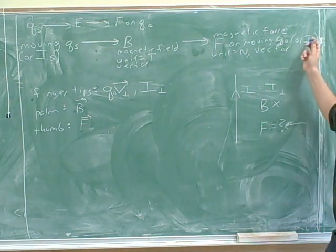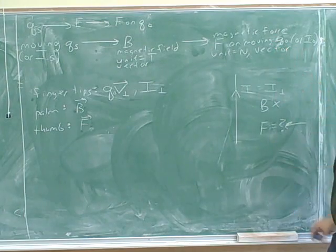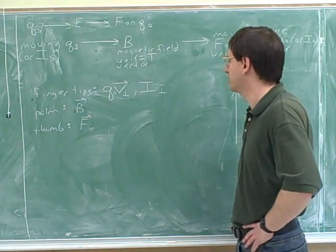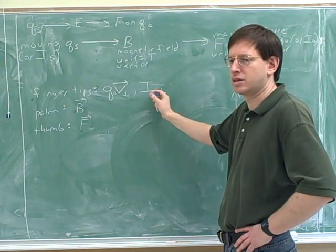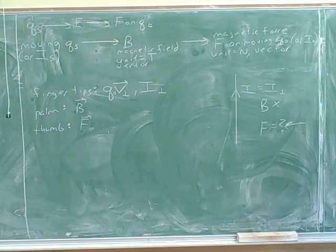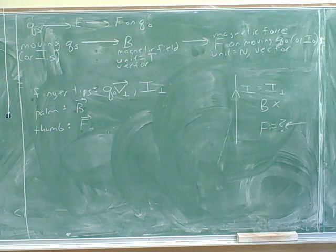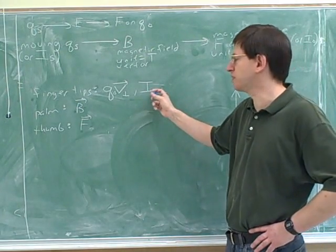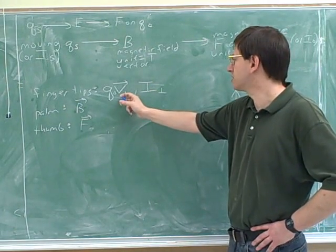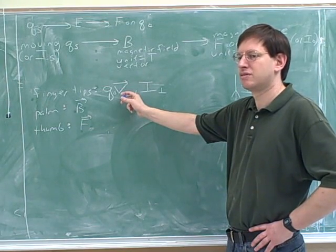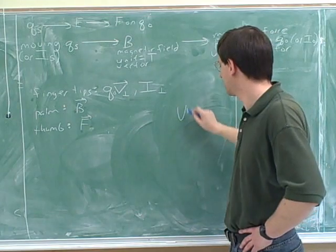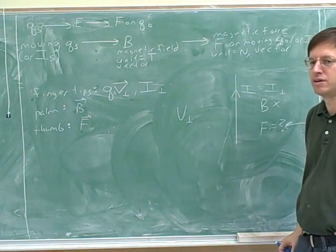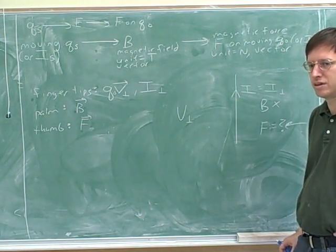So this is how we deal with the case of a current, which you'll see more often than just a separate charge. Just point your fingertips in the direction of I perpendicular — that stands for the component of the current that is perpendicular to B. And V perpendicular is the component of the velocity vector that is perpendicular to B.